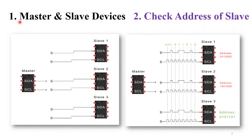Now let's look at the working steps of I2C protocol with an example. The first step shows the master and slave devices: there is one master and multiple slaves — slave one, slave two, and slave three. This is the basic structure of an I2C protocol communication setup.